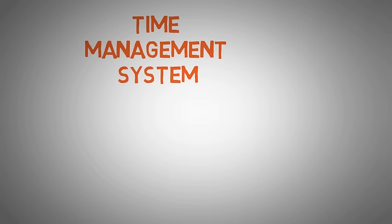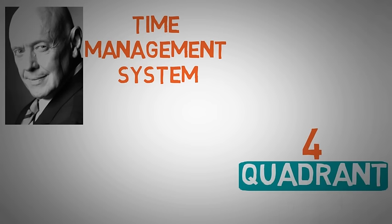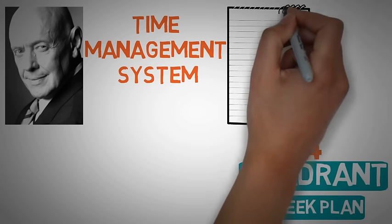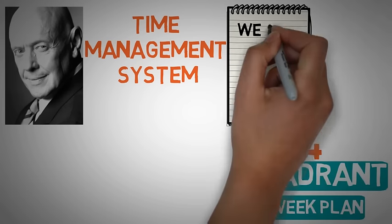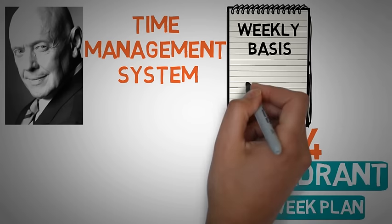What's up guys, today I want to talk to you about the time management system that writer Stephen Covey teaches in his book The Seven Habits of Highly Effective People. The four quadrant week plan is a tool that helps people organize their tasks on a weekly basis, unlike most time management tools today that are based on daily planning.